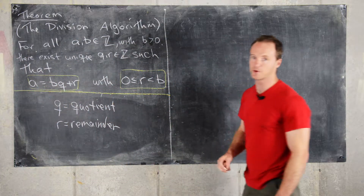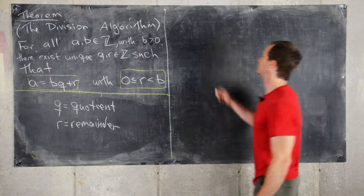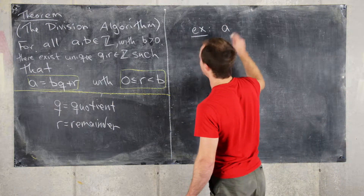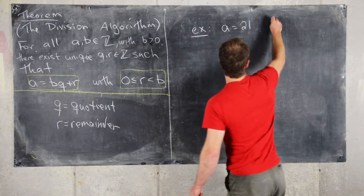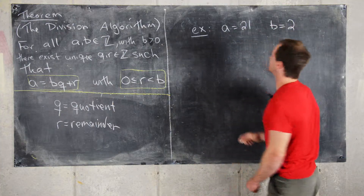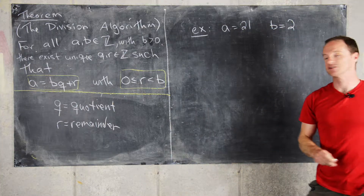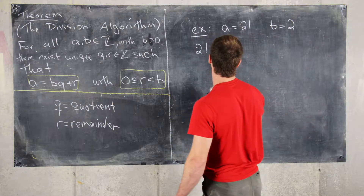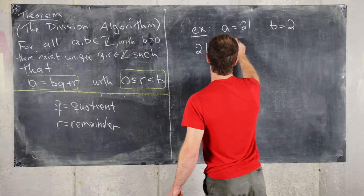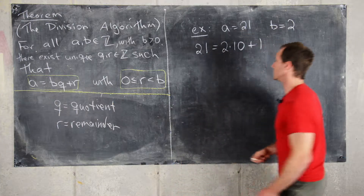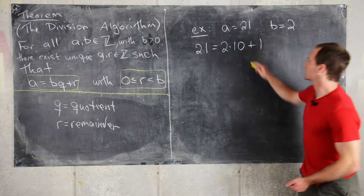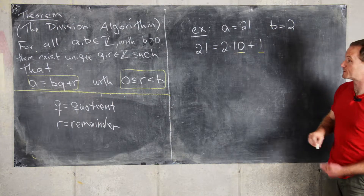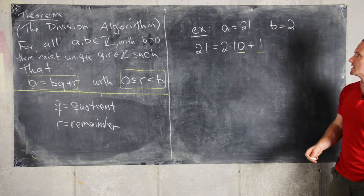Before we get to the proof, let's look at some examples. Starting with A equals 21 and B equals 2, we can see that 21 equals 2 times 10 plus 1. So our Q value is 10 and our R value is 1, and R is between 0 and 2 as needed.